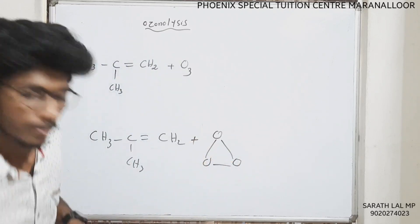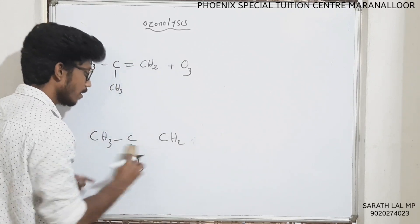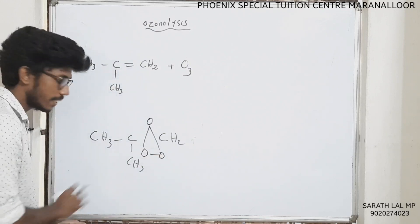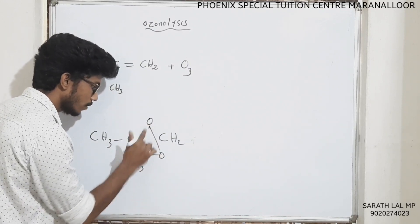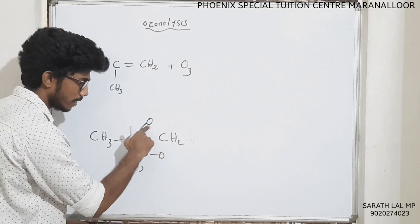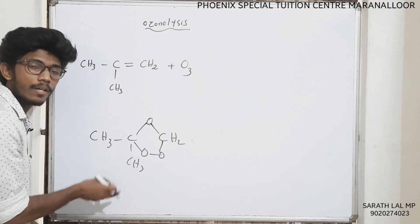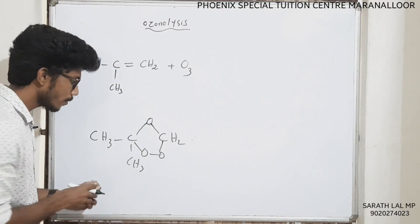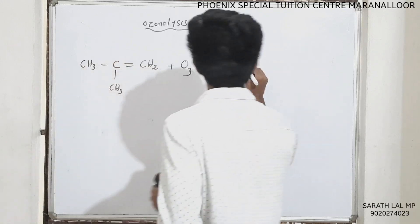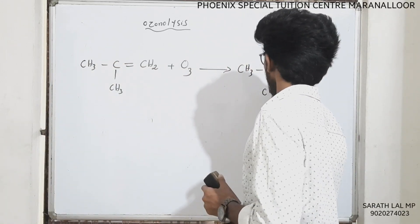We don't have ozone yet. Now, what is ozonolysis? We break this double bond — we have an ozonide. Clear? Here's what we treat: ozone reacts with the double bond. This is the last step of ozonolysis. Now we treat the ozonide — we use CH3, CH3.